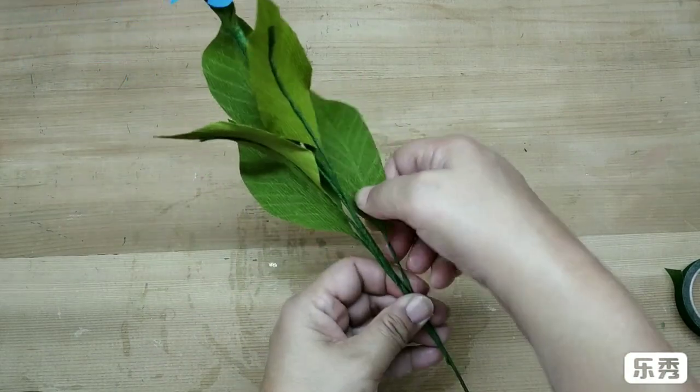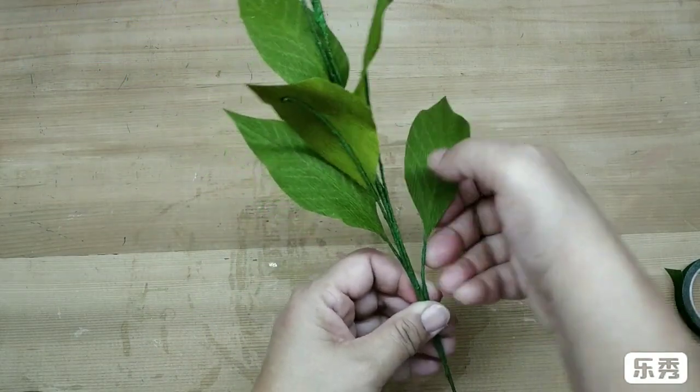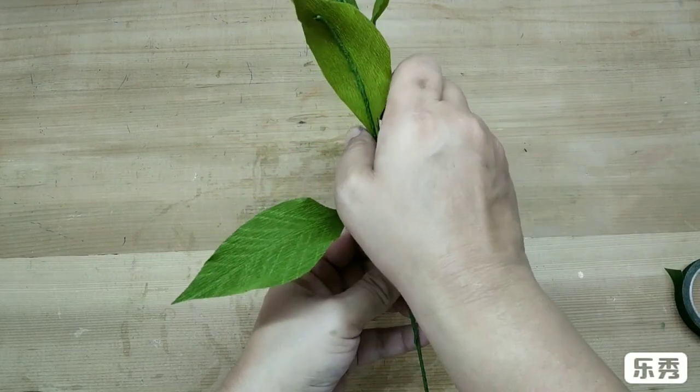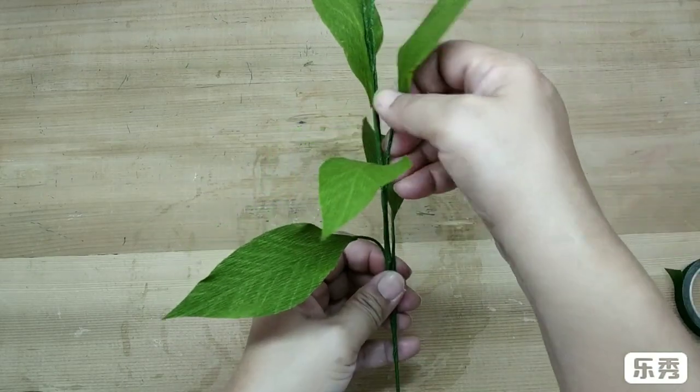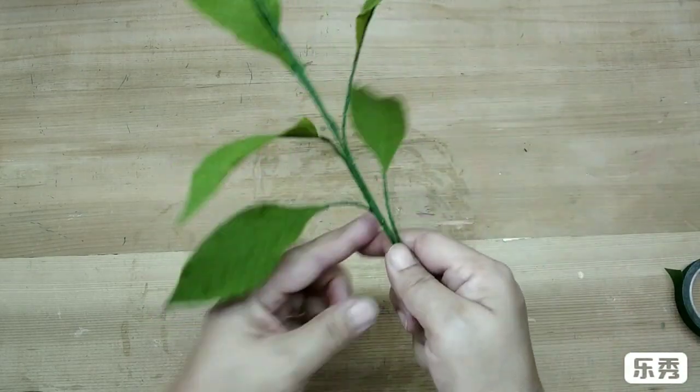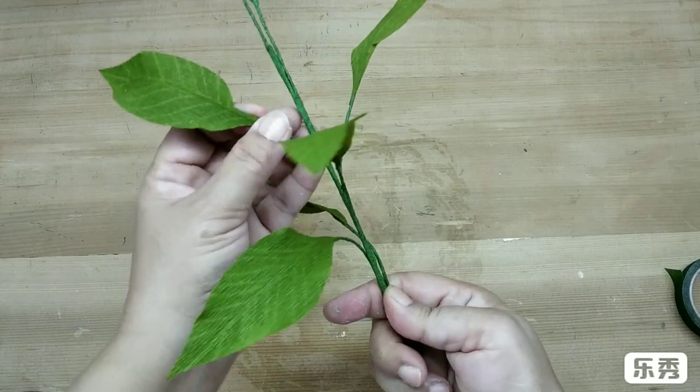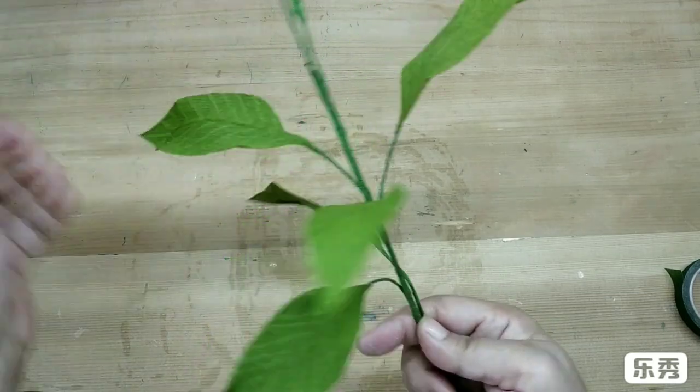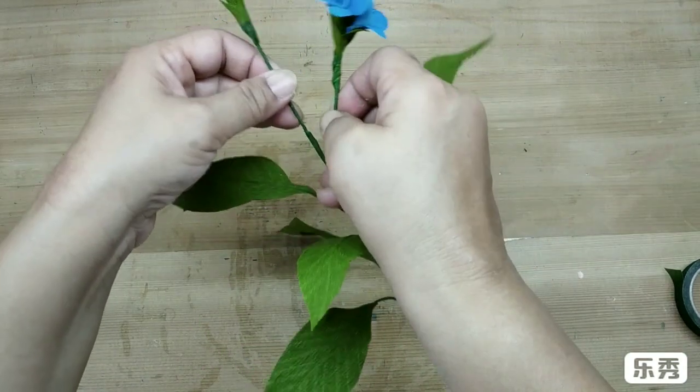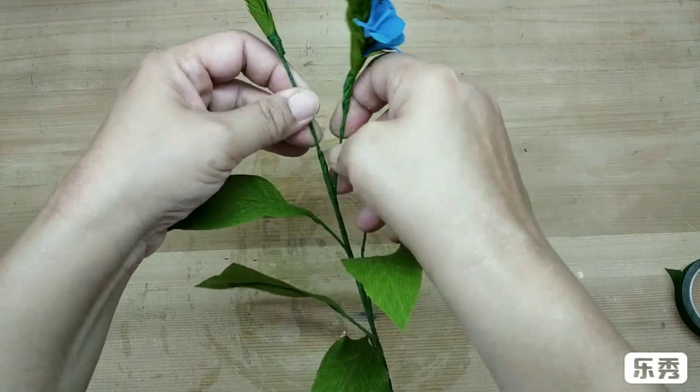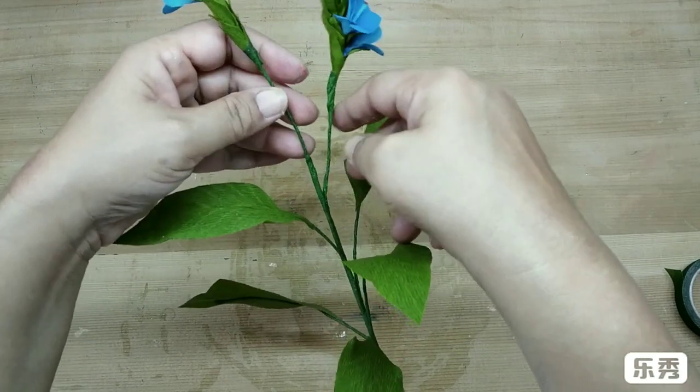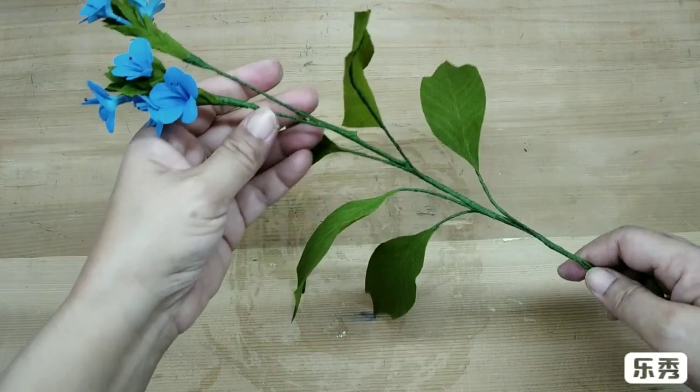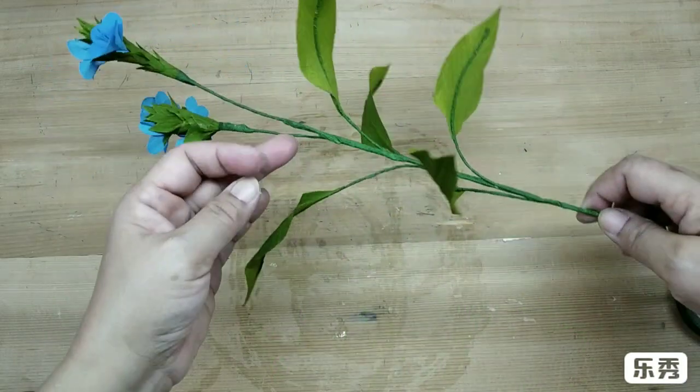This is how it looks. Now just open out the leaves. They are almost parallel to the ground. This is how the stem would look.